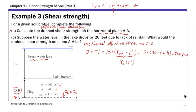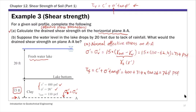The shear stress at failure — which by definition is the shear strength — is calculated using the Mohr-Coulomb failure criterion: tau_f = C prime + sigma prime × tan(phi prime). With C prime and phi prime given, that's 400 + 714 × tan(26°), which gives approximately 748 PSF. That is the drained shear strength on horizontal plane AA.